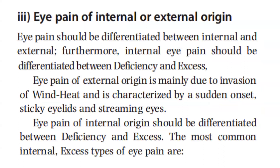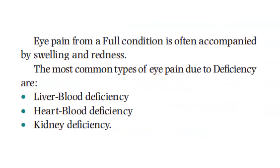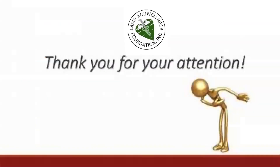The most common internal excess types of eye pain are liver Yang rising, liver fire, heart fire, liver wind, damp heat, phlegm heat, and blood stasis. Eye pain from a full condition is often accompanied by swelling and dampness. The most common types of eye pain due to deficiency are liver blood deficiency, heart blood deficiency, and kidney deficiency. Thank you for your attention.